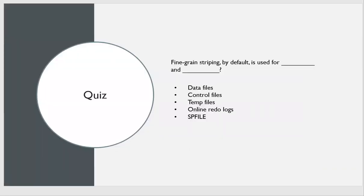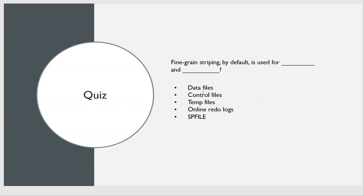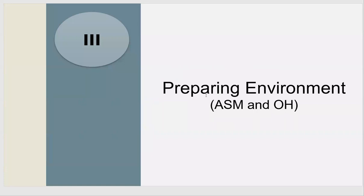Quiz time: fine grain striping by default is used for which files? Data files, control files, temp files, redo log files, or SP file? The answer is: control files and redo log files.